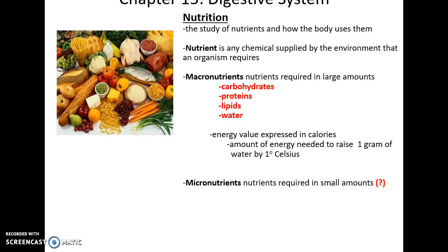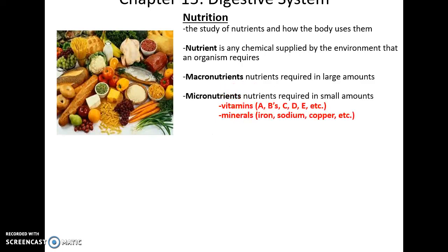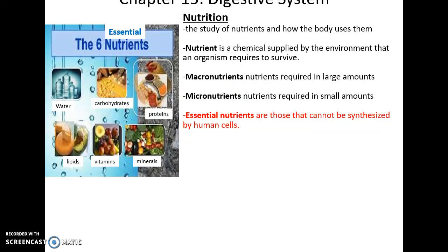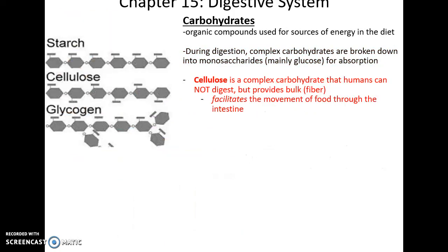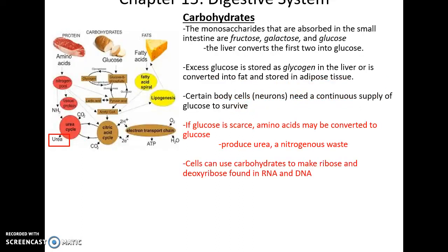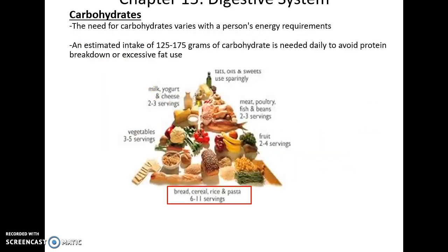Nutrition is the study of nutrients and how the body uses them. Nutrients are anything we absorb that we need. Macronutrients include carbohydrates, proteins, lipids, and water. Micronutrients are things found pretty much on a vitamin bottle — vitamin A, vitamin B, iron, copper, etc. Essential nutrients are those that cannot be synthesized by the body, so we need water, carbohydrates, proteins, minerals, vitamins, and lipids. Carbohydrates get broken down into monosaccharides that can then be absorbed. There's also cellulose — a long molecule of glucose that we are unable to digest. This is what fiber is: the undigested carbohydrates. Fiber helps move food through the intestine. If glucose ever becomes scarce, we may convert amino acids or fatty material into glucose. When amino acids are broken down, it produces urea, which we have to get rid of through the kidneys. Carbohydrate needs vary from person to person, but somewhere between 125 to 175 grams.